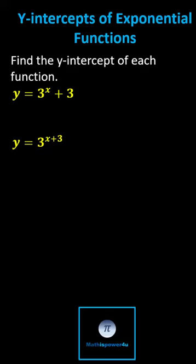We're asked to find the y-intercept of each exponential function. The y-intercept of a graph is the point where the graph crosses the vertical or y-axis. Since every point on the y-axis has an x-coordinate of zero, to find the y-intercept, we set x equal to zero and solve for y.